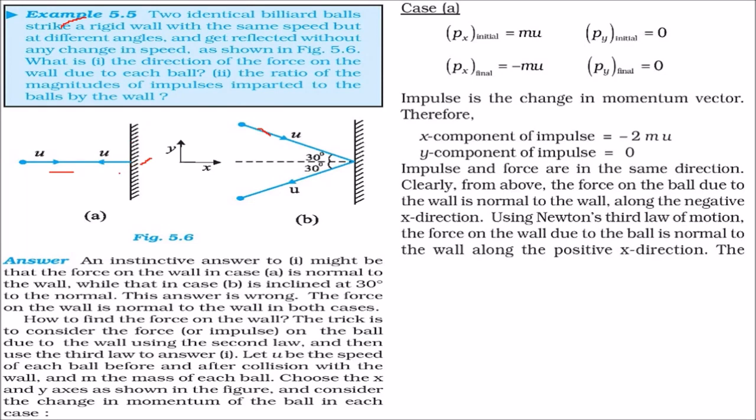see, the very intuitive answer will be, you know, might be the force on the wall will be normal to the wall like this. And in this case, it is inclined at say 30 degree. This is 30 degree.